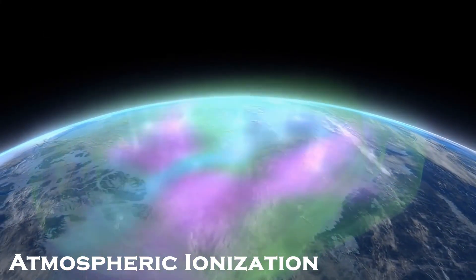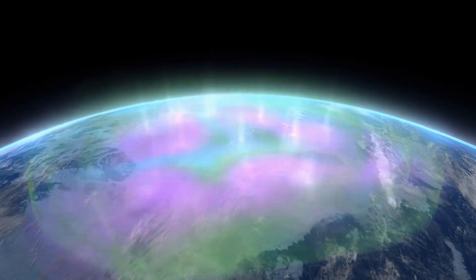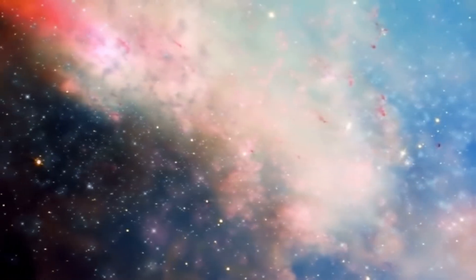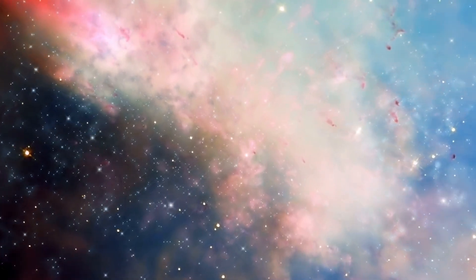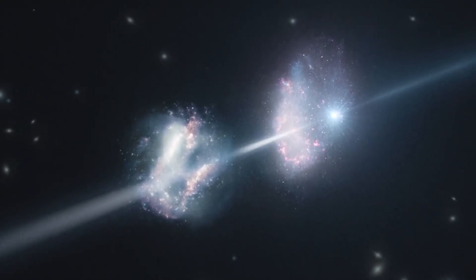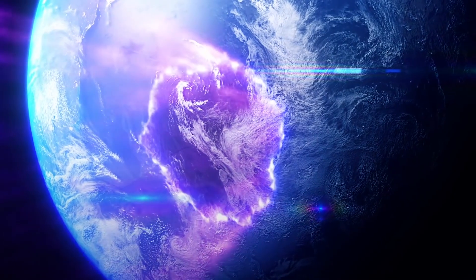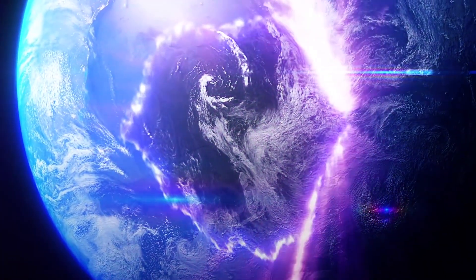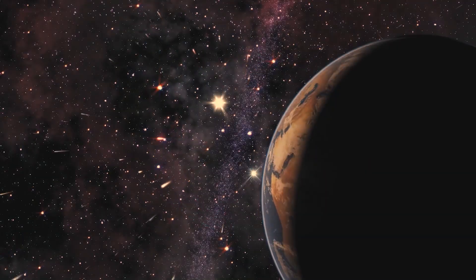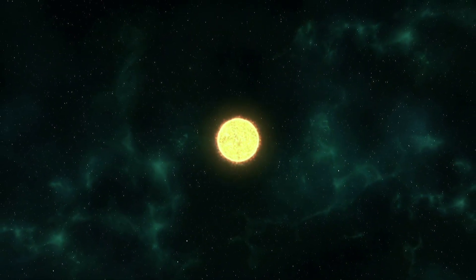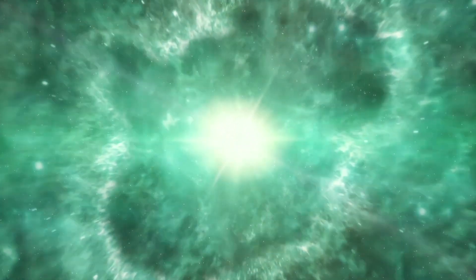Atmospheric Ionization. The ionizing radiation from a nearby GRB could ionize molecules in Earth's atmosphere, leading to atmospheric ionization. This ionization process can result in the formation of reactive species, such as ions and free radicals, which can have various effects on atmospheric chemistry. One potential consequence of atmospheric ionization is the depletion of the ozone layer. The ionizing radiation can break down ozone molecules in the upper atmosphere, leading to a reduction in the protective ozone layer. Ozone depletion would result in increased levels of harmful ultraviolet UV radiation reaching the surface, with implications for human health, ecosystems, and the overall functioning of the biosphere.